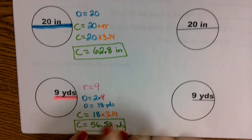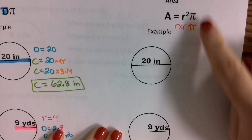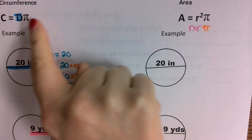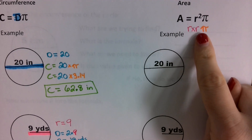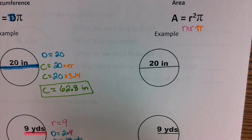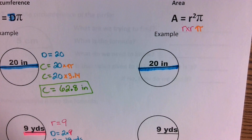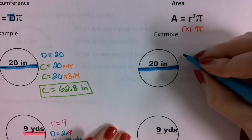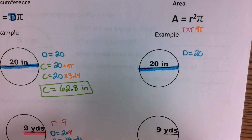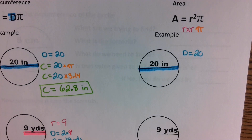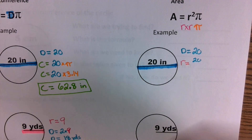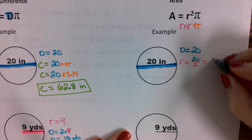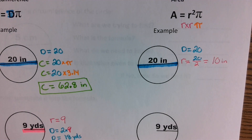We found our circumference for these two. Now let's go ahead and find area. For area, you need the radius — you must have the radius value. For our first example, we already stated that the diameter was equal to 20. So how can I convert the diameter into the radius? We divide it by 2. So we take the 20 and divide it by 2, and that means the radius is going to be equal to 10 inches.